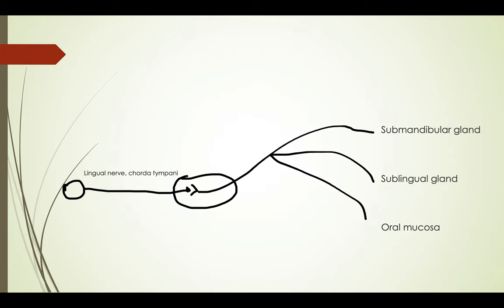Here is the diagram: the superior salivatory nucleus sends pre-ganglionic fibers via the lingual nerve and the chorda tympani nerve to the submandibular ganglion. Post-ganglionic fibers from the ganglion then supply the submandibular gland, the sublingual gland, and the oral mucosa.